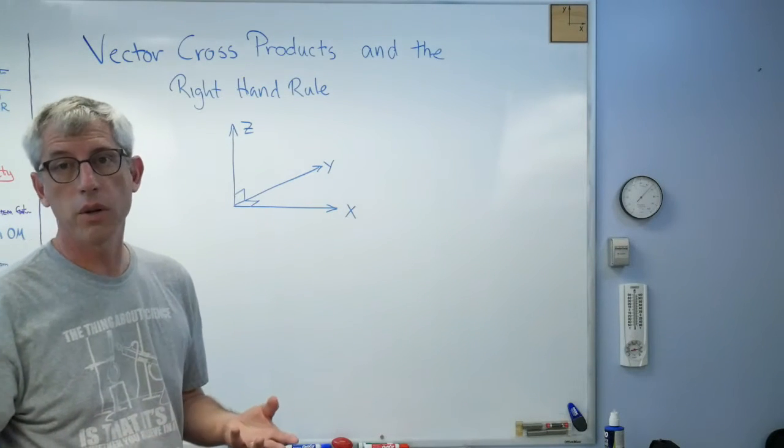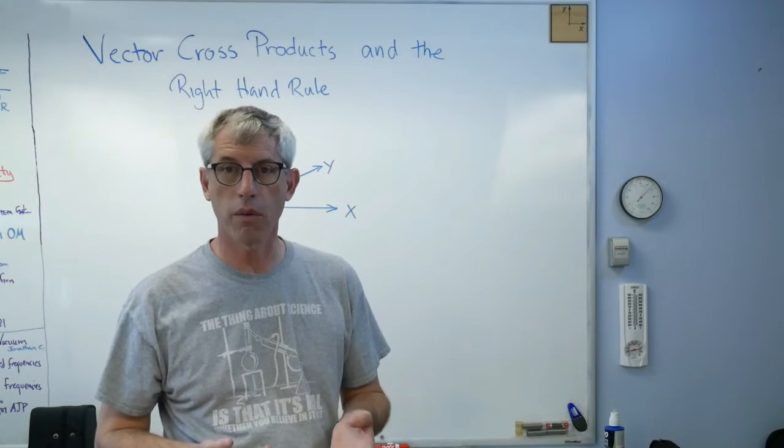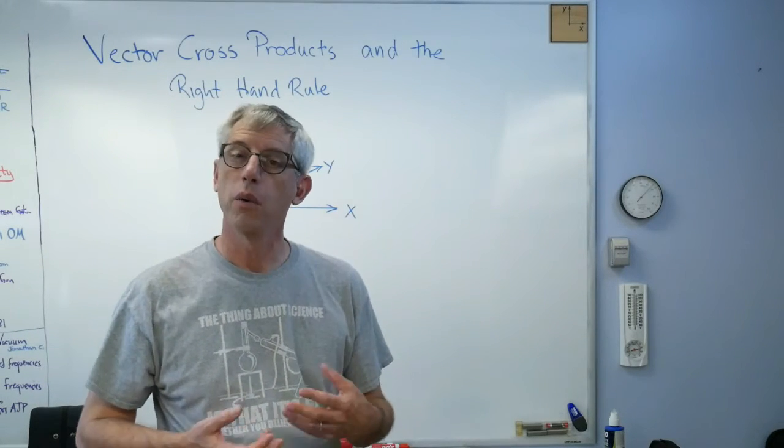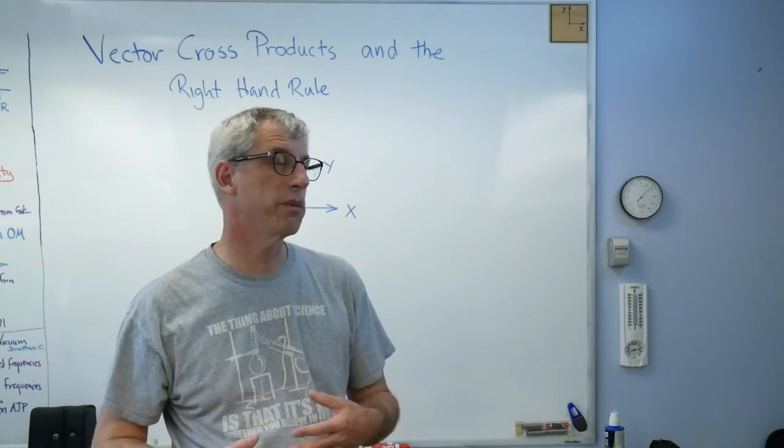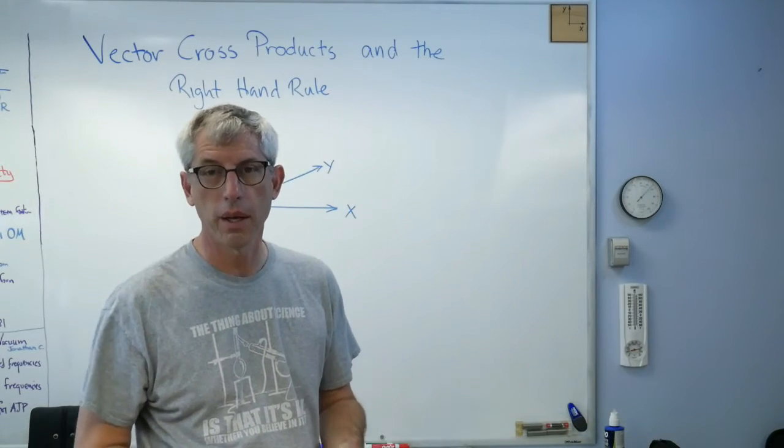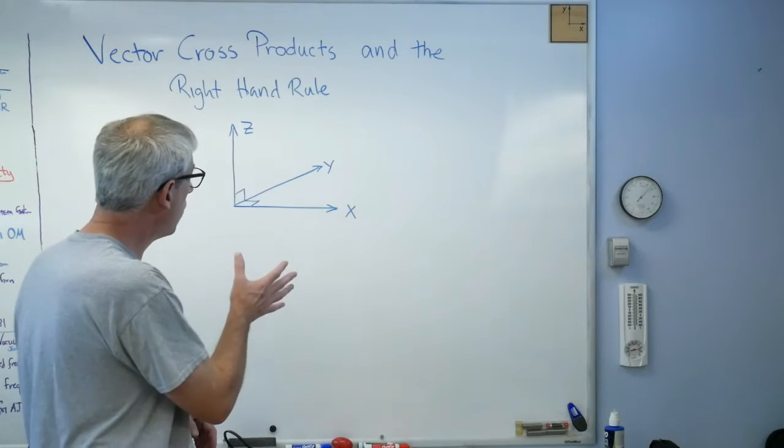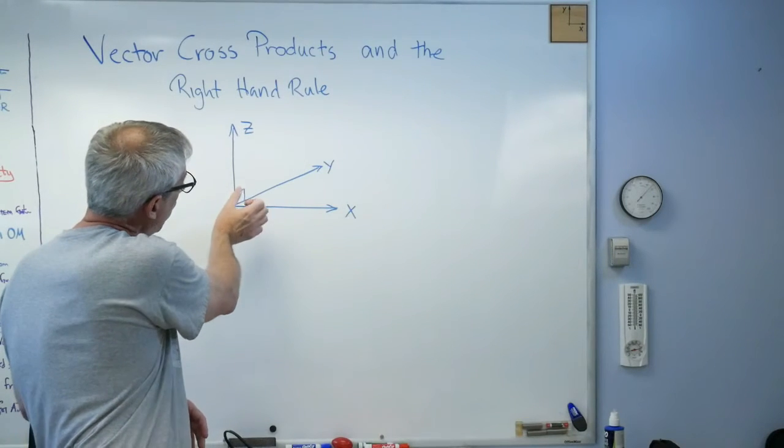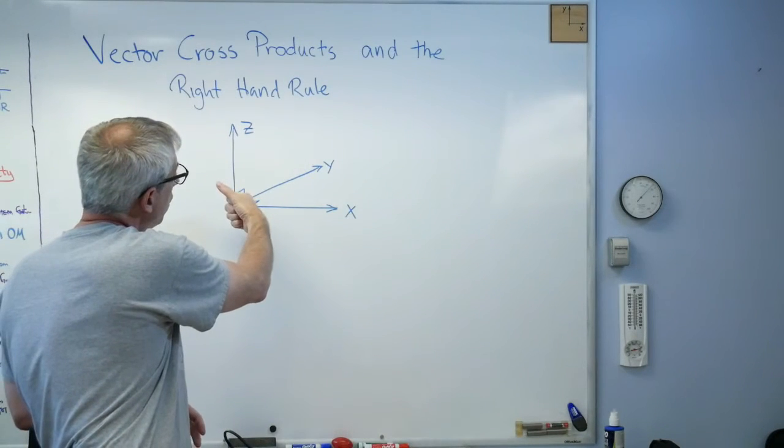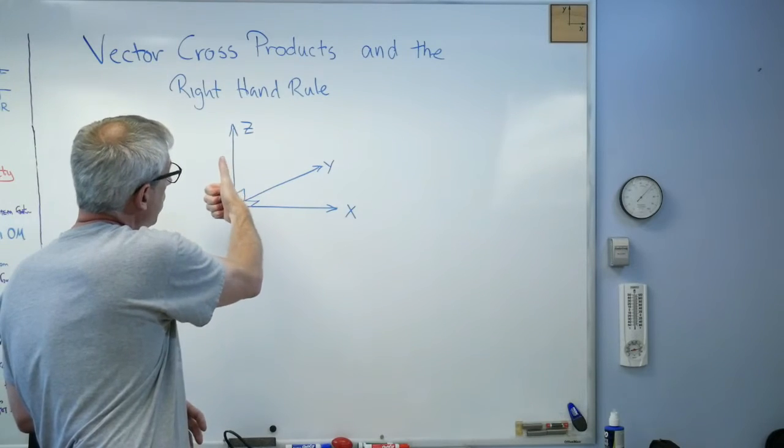Well, left-hand coordinate systems are okay. There's nothing wrong with a left-handed coordinate system. We tend to use right-handed coordinate systems. We have to standardize on something. So if you grab the x-axis, rotate it into the y-axis, and stick your thumb up, you get the z-axis.